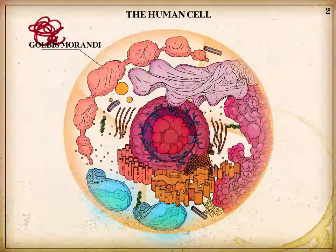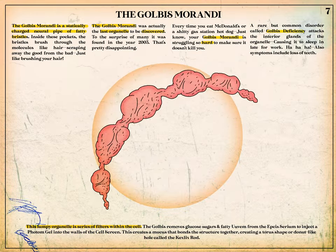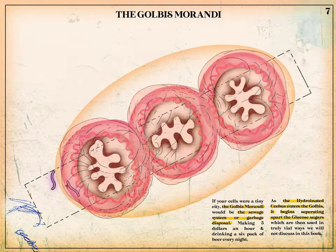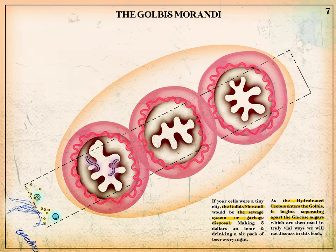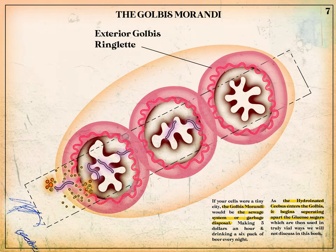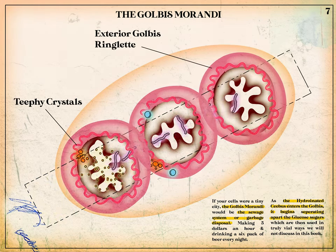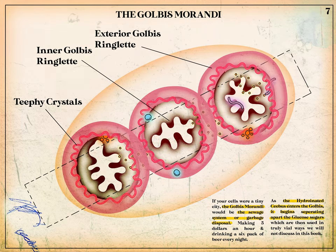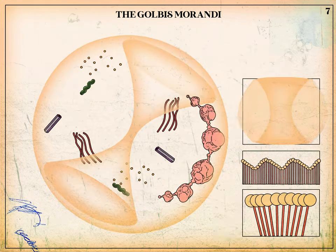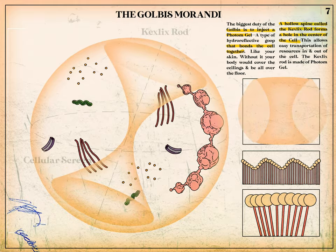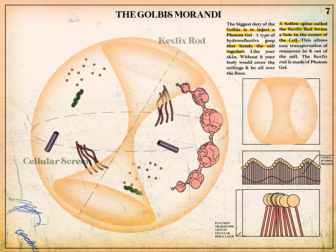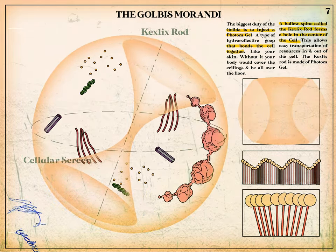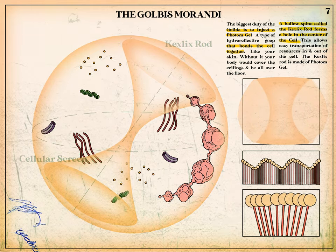Next we have the Golbus mirandi. This lumpy organelle is a series of filters within the cell. The Golbus removes glucose sugars and fatty uvum from the EPCS serum to inject a photum gel into the walls of the cell screen. This process creates a mucus that bonds the structure together, creating a torus shape or donut-like hole called the Kexlex rod.